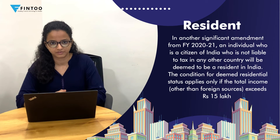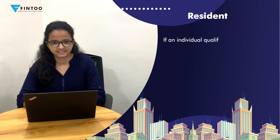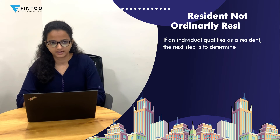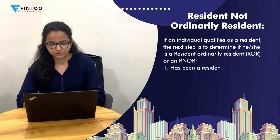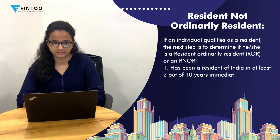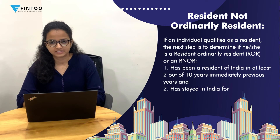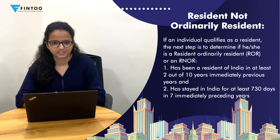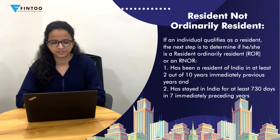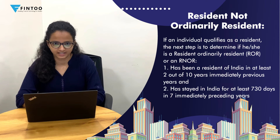This deemed residency will be applicable only in case the total income of the individual, other than foreign income, exceeds ₹15 lakhs. The next is resident and ordinary resident or not ordinary resident. After learning about the residential status of an individual, the next step is to determine if he is a resident and ordinary resident or a resident and not ordinary resident. In case he satisfies any of the below two conditions, he will be considered as a resident and ordinary resident. The first condition is that the individual should be a resident in India in 2 out of the 10 immediately preceding years. The second condition is that the individual should have stayed in India for 730 days out of the 7 immediately preceding years.